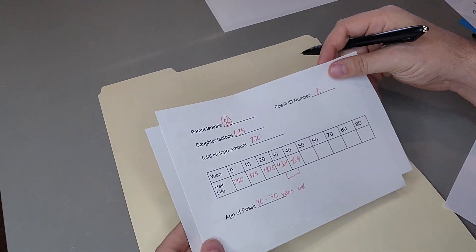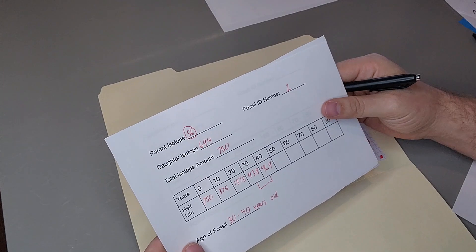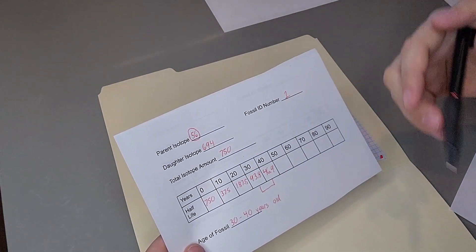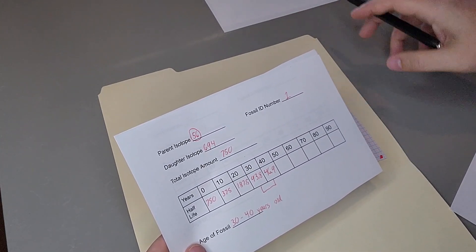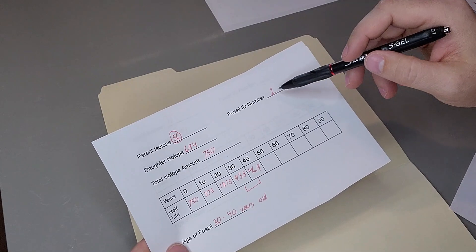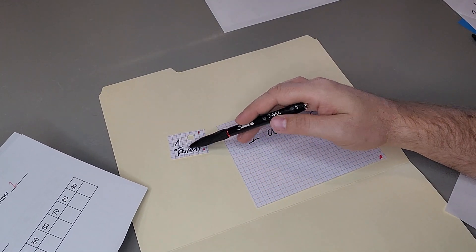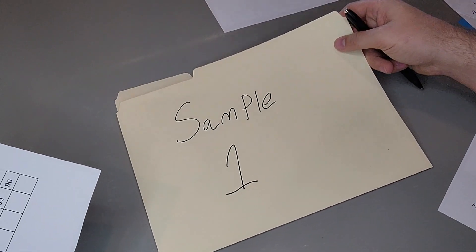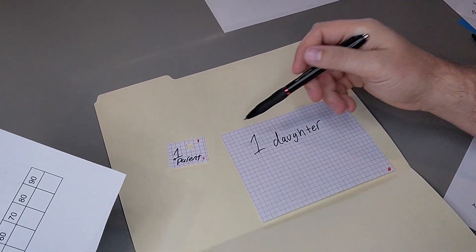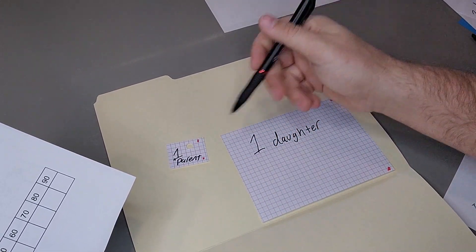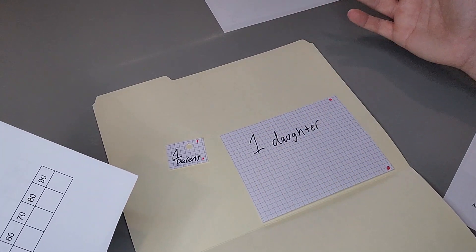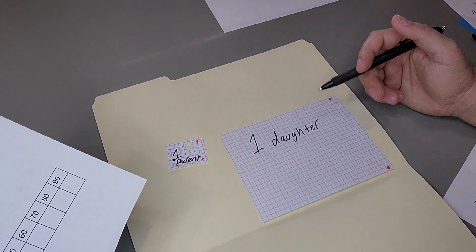At that point, they would take their sheet, and if you just want them to practice this process, you can have them put their names on it and turn it in. But I have their fossil ID number on here, which is what this signifies. It says one parent, that means it's folder one, sample one, and then one daughter. So the one just is for when they drop and fall all over the floor, you know what folder to put them in.